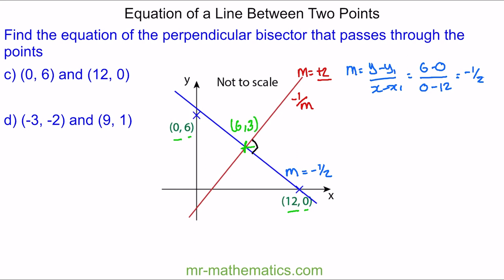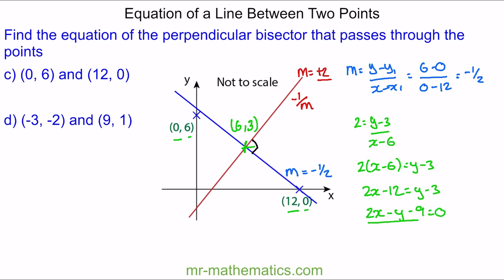I can use these two points with our equation. The gradient of the red line, which is 2, is equal to y minus 3 over x minus 6. I'll rearrange it into the form of a straight line: 2 lots of x minus 6 is equal to y minus 3. So 2x minus 12 equals y minus 3. Making the equation equal to zero: 2x minus y minus 9 is equal to zero, and this is the equation of the red line.